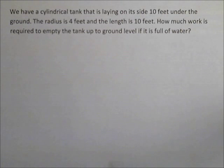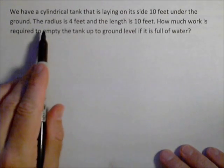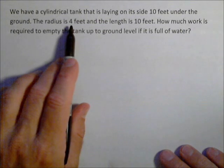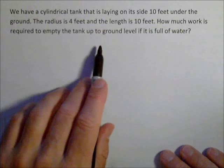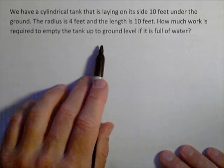We're going to take a look at a work problem here. When we're talking about setting up the integral, we probably won't calculate it. So we have a cylindrical tank that's laying on its side 10 feet under the ground. The radius is 4 feet and the length is 10 feet. How much work is done to empty the tank up to ground level if it's full of water?